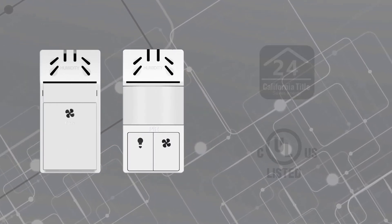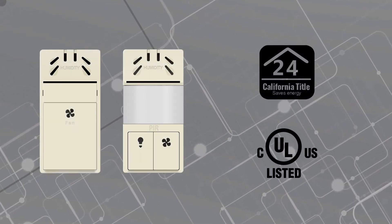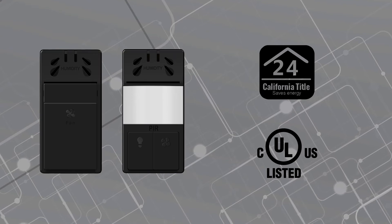Enerlite's humidity sensors are CUL listed and CA Title 24 compliant. They also come with interchangeable face covers for quick color matching.